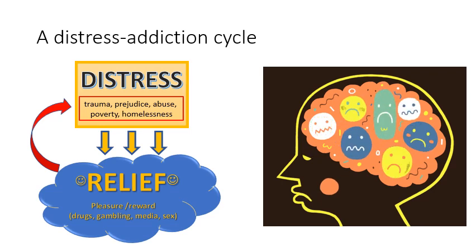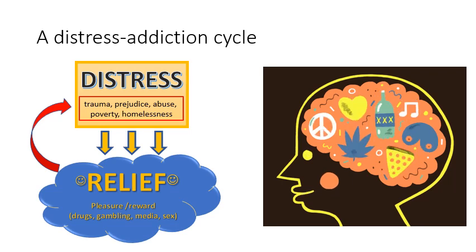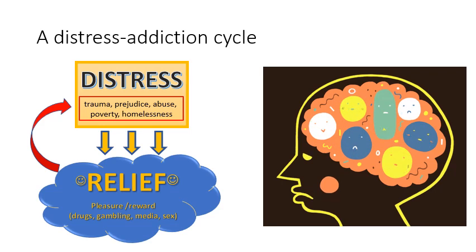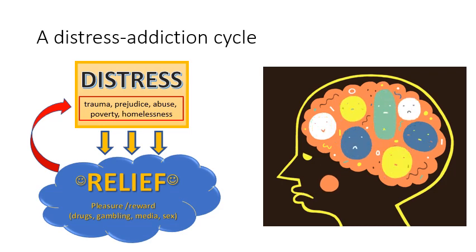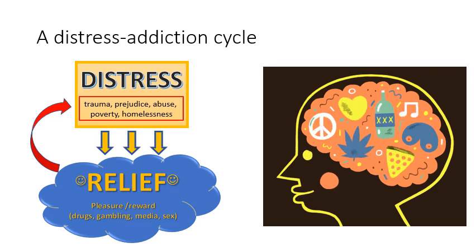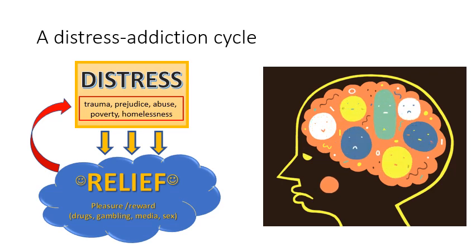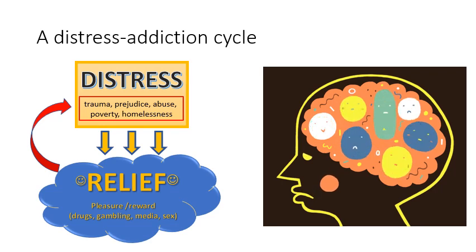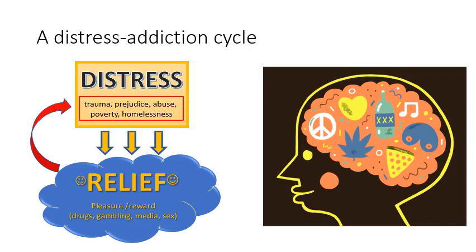This can seem like quite a miserable picture, but for us as psychologists, understanding addiction through this lens of distress means we have two targets for therapy and future research. We can help people by addressing the behaviour itself — the harms it causes and how to reduce those behaviours. But we can also try to tackle the underlying root of the distress, helping people to understand their past and how it has led them to where they are. Psychology has something really powerful and important to do in helping people suffering from addiction.